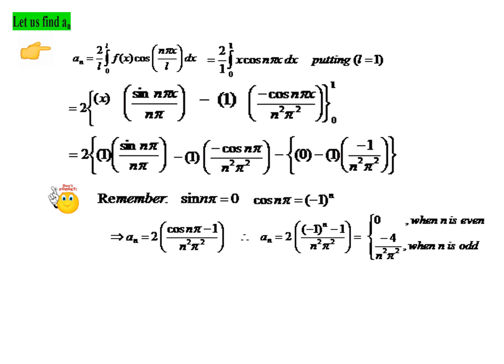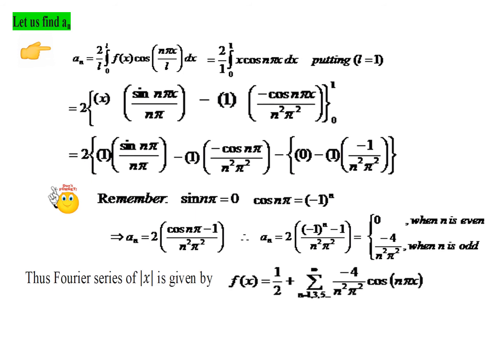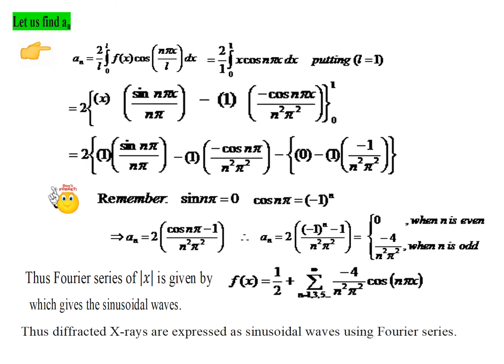Hence the Fourier series of modulus x is: f of x equals a naught by 2, where a naught is 1, so 1 by 2, plus sigma an cos(nπx). Substituting an as minus 4 by n squared pi squared, and since an has value only for odd integers, we specify n equal to 1, 3, 5 etc. This gives the sinusoidal waves. Thus we have expressed the diffracted x-rays, which were in the form y equal to modulus x, as a cosine series — the sinusoidal waves — using the Fourier series technique.